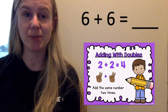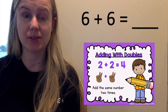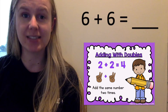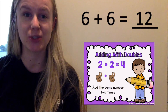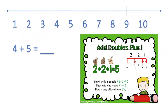We also know our doubles facts in a snap. Six plus six equals blank. I'm going to use my rule adding with doubles because I see the same number two times. Six plus six is a double and I know six plus six equals twelve. I did not have to draw circles because I knew my doubles facts. When we see numbers that are different by one, that means they're next to each other on the number line. We can use add doubles plus one. Four plus five equals blank.